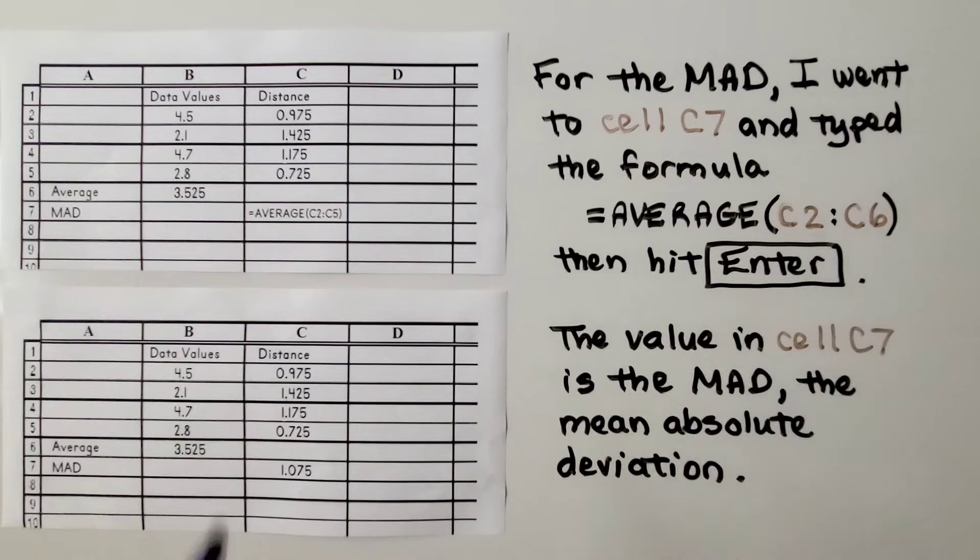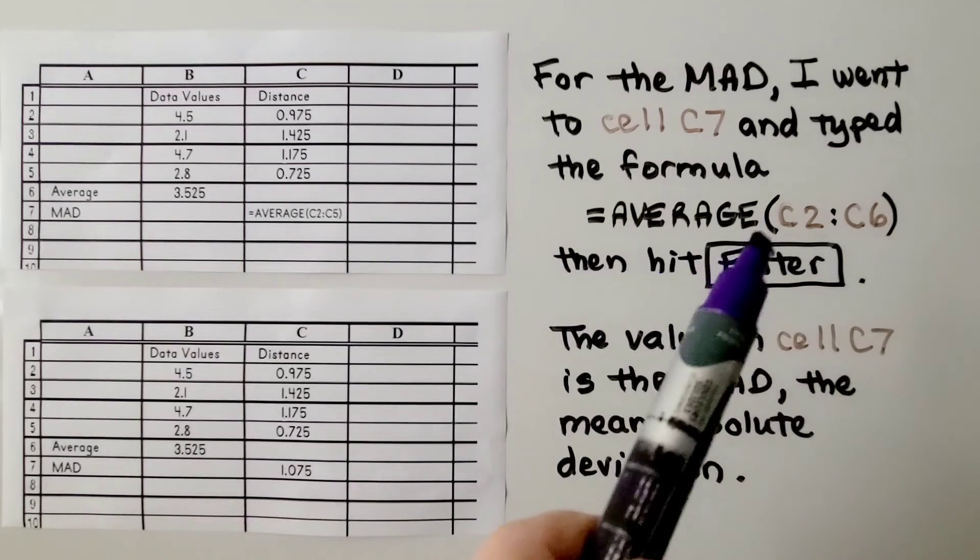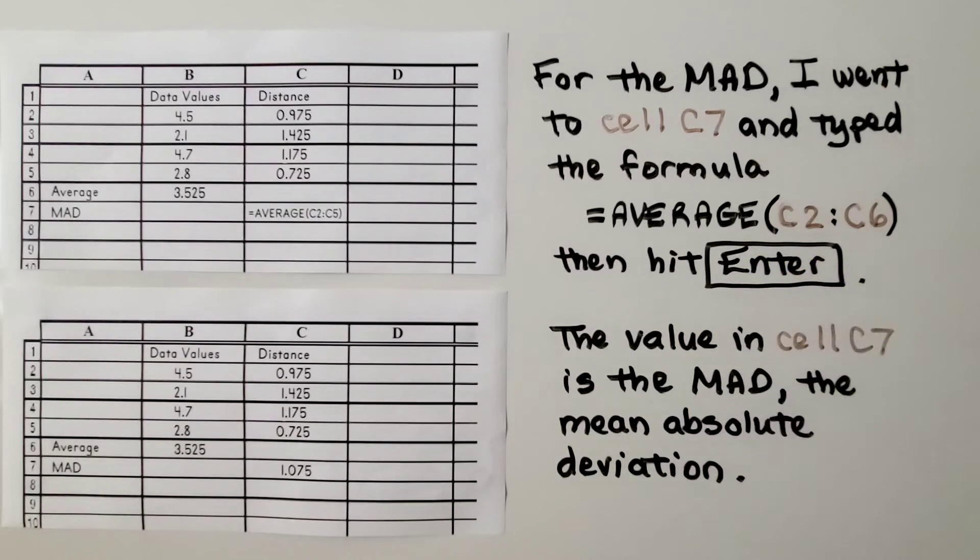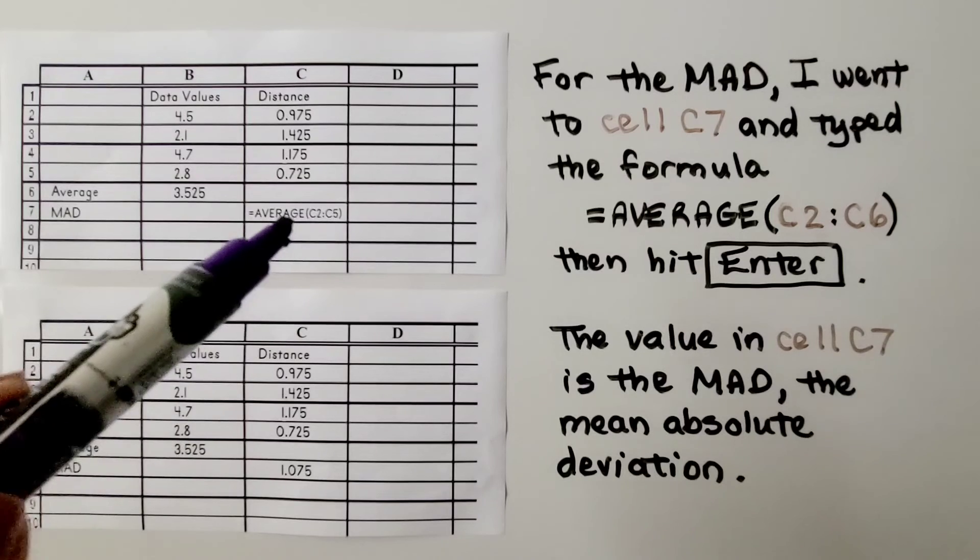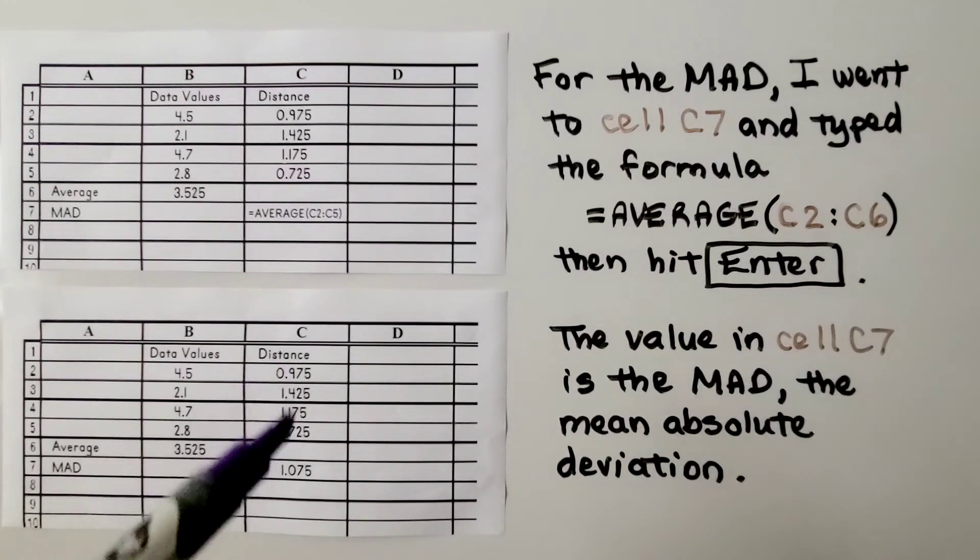Now for the MAD, I went to cell C7 where I typed MAD in this row. And I typed the formula equals average, parentheses, C2 colon C6. Typing in this formula right here and hitting enter, it gave me the average of these distances. And that's the MAD. The value in cell C7 is the MAD, the mean absolute deviation.